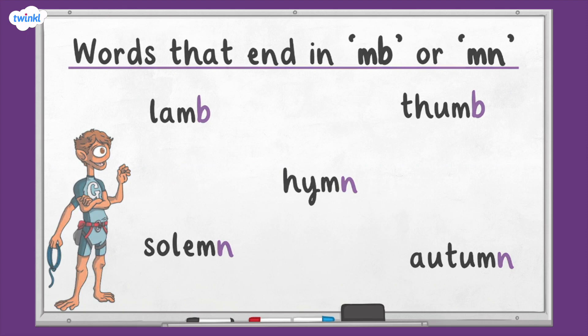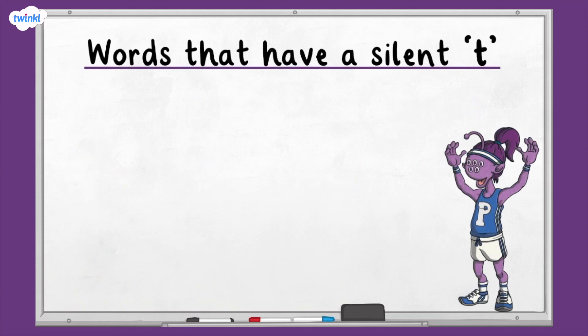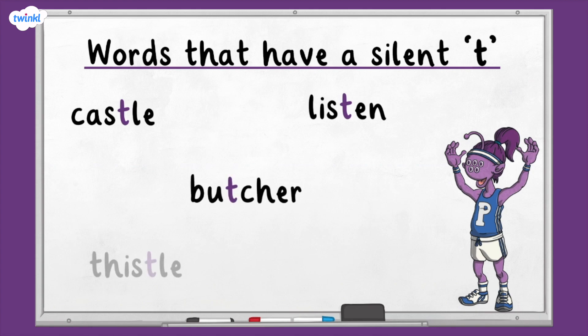Some words might have a silent T. For example: castle, listen, butcher, thistle, and match.